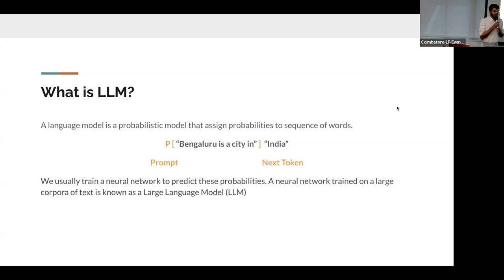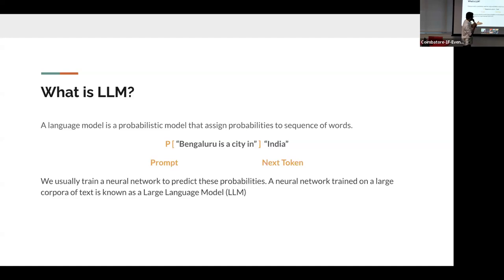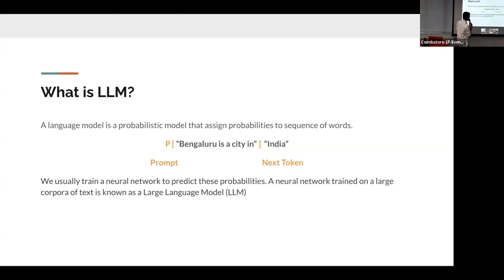What is an LLM? LLM is a probabilistic model that generates probabilities for the next word it is going to generate. For example, if the input is 'Bangalore is a city in', it generates probabilities for the next word and gives the highest probability result. We can see that 'Bangalore is a city in' is the prompt, and the LLM generates the next token because it is trained on large text data. It can easily identify patterns between words and determine what the next word will be. This is a probability predictor between words — that is what is happening inside the LLM.